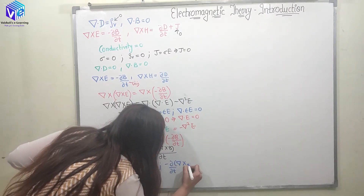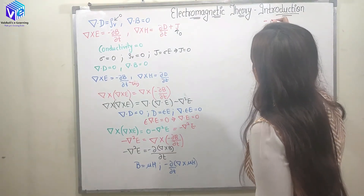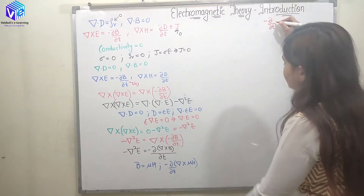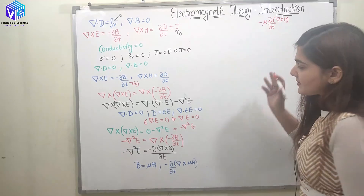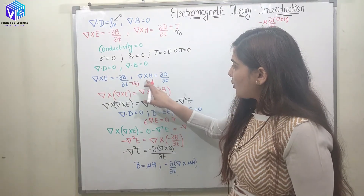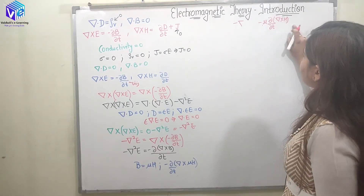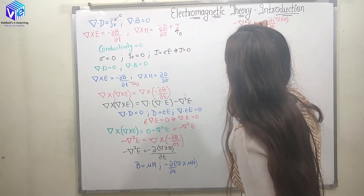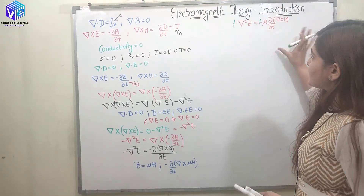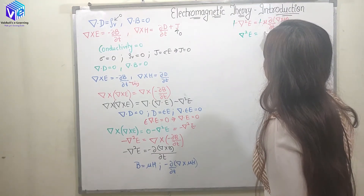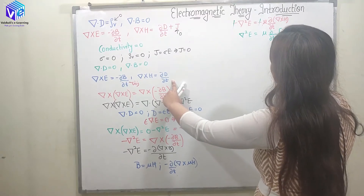So the right-hand side becomes −μ ∂/∂t(∇×H). I know that ∇×H = ∂D/∂t. So the right-hand side is −μ ∂/∂t(∂D/∂t). Equating left and right: −∇²E = −μ ∂/∂t(∇×H). Cancelling the minus signs, ∇²E = μ ∂/∂t(∇×H). You can follow along in your notebooks so you don't get confused.